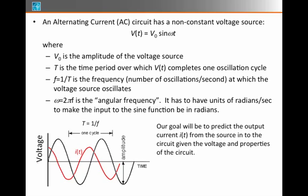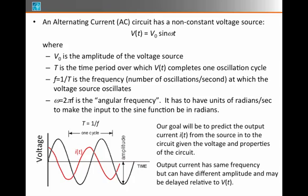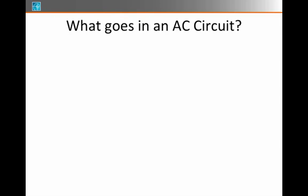Our goal will be to predict the current that comes out of a voltage like this. So if the voltage is varying sinusoidally in time, so will the current, and our expectation is that the current may have a different amplitude, or a different timing of this sinusoidally varying current relative to the voltage, but we want to try to make predictions about that. For sure, the current will be varying with the same frequency. It's just that it may be shifted relative to the voltage.